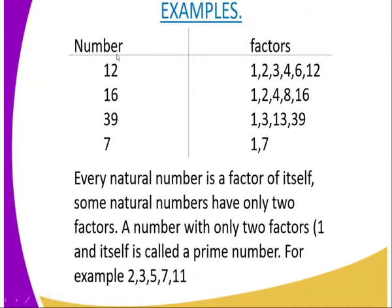We can have examples of factors. We can look at factors of 12 which are 1, 2, 3, 4, 6, 12. As you can see from our screen, we have got factors of 16 whereby we are able to see them on our screen. We also have our factors of 39. These factors are numbers which when we divide by the number, there is no remainder.